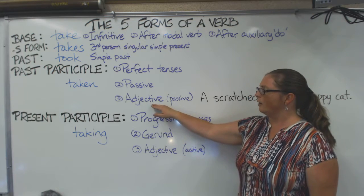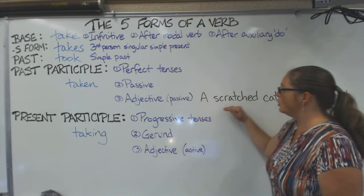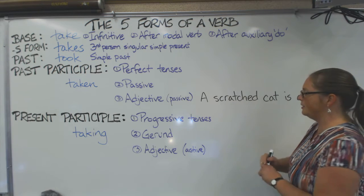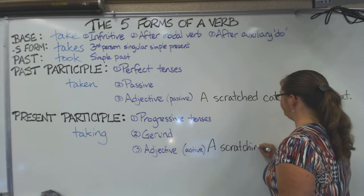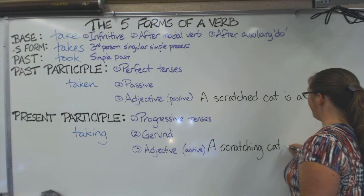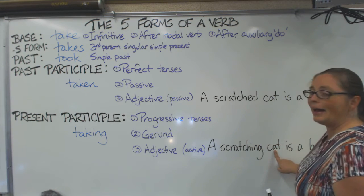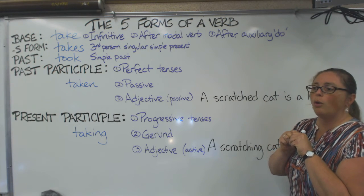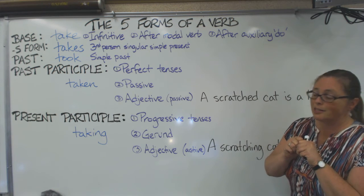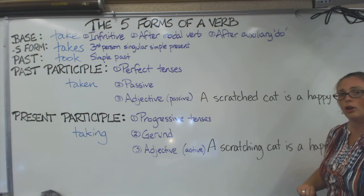Finally, the present participle is used as an adjective — just like the past participle, except with an active meaning rather than a passive one. For example: 'A scratching cat is a happy cat.' Now you imagine the cat is doing the scratching. This is an active meaning because the cat is doing the action, not receiving it.